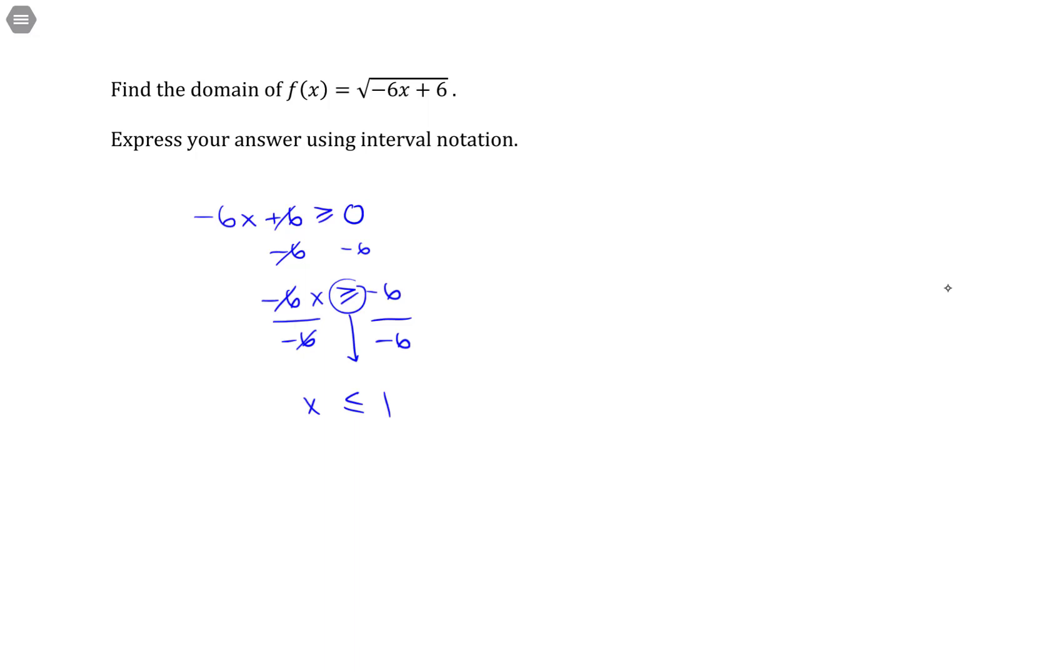This is the set notation for my domain. For interval notation, we just translate that into an interval. If I have all values less than or equal to 1, that's all values from negative infinity to 1, including the 1.